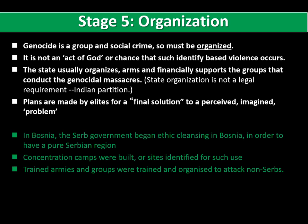As mentioned from the start, genocide is no act of God, it is no act of chance — it is organised. Genocide is a group and social crime; it has to have that degree of organisation. How can you kill hundreds, thousands, millions of people without the weapons, the means to do so, without the camps being built, without the hate being stirred up and orchestrated? The state usually organises and arms and financially supports groups that make genocidal massacres possible. In Bosnia, the Serb government began ethnic cleansing in Bosnia in order to have a pure Serb region. Concentration camps were built — not necessarily from scratch as in the Holocaust, but sites were identified and old factories were used for such purposes. And of course, organisation involves training your armies, your militias, the groups who are going to do the killings or commit the attacks.